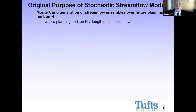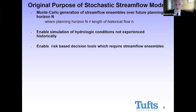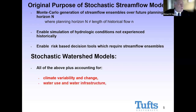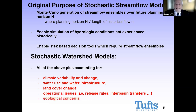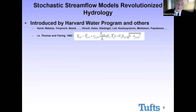Where do these ideas come from? Originally, stochastic streamflow models were intended for the generation of ensembles when you had a planning horizon that may be longer or shorter than the observed record. This would enable simulating conditions experienced outside the window of historical flows, and enable risk-based planning methods, of which there are increasingly many in current practice. So stochastic watershed models can do all those things the original stochastic streamflow models were intended to do, but also account for climate variability and change, water use, water infrastructure, land cover changes, and operational issues — particularly at high spatial and temporal resolution.